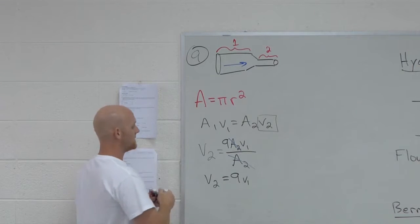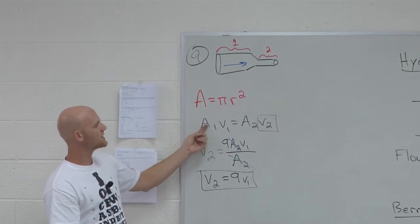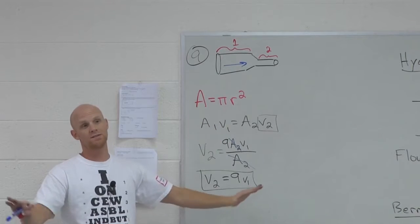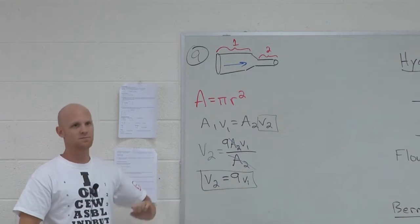So, again, region two is higher, and this tells me it's nine times higher. So if you can work it out in your head and be like, oh, area over here is nine times bigger, so velocity is nine times smaller, great. If you actually want to mathematically work it out and do a little substitution, awesome, either way.